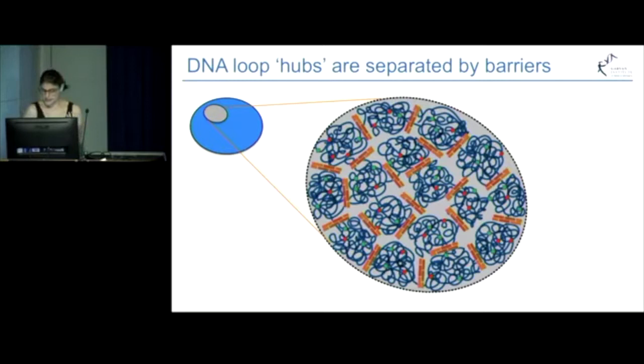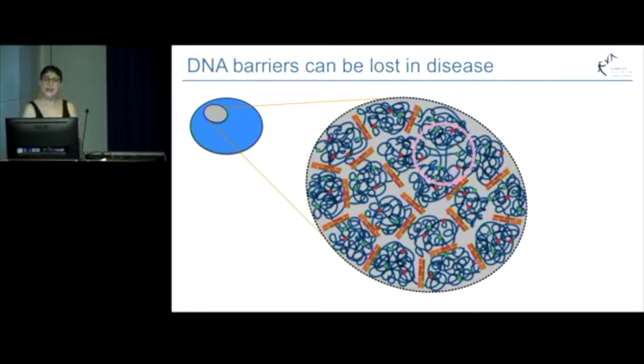But what we're starting to see is that in disease, they can be lost. This is because when we visualize the 3D disease genome, we see that you get these new loops and these new contacts occurring between the hubs which shouldn't be there.